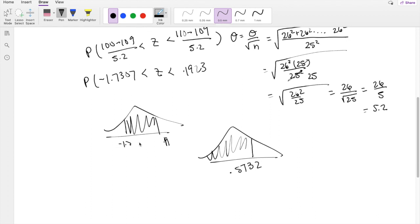And when you look up negative 1.73, they give you the positive 1.73, which is here. And they say this probability right here is 0.9587.